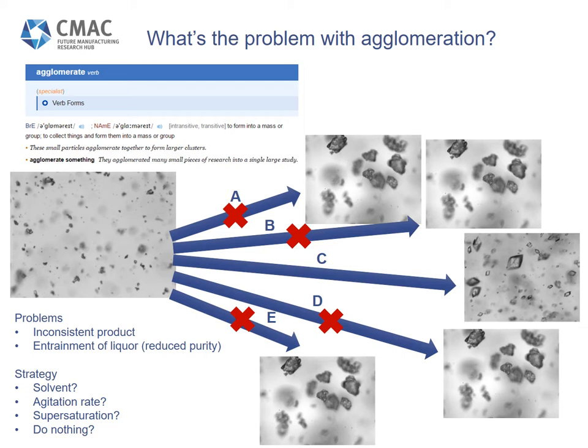There are a couple of strategies possible for dealing with agglomeration. We can look for process conditions where agglomeration does not occur, including looking at the impact of process parameters such as solvent type, mixing regimes, and seed type. On the other hand, if we're happy with forming agglomerative particles we might do nothing about them as long as we can produce them consistently. For this talk I'm going to mostly talk about how we identify process conditions to avoid agglomeration and how particle vision tools aid in this.